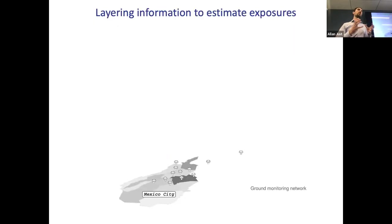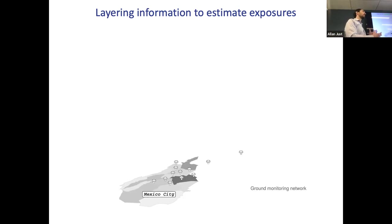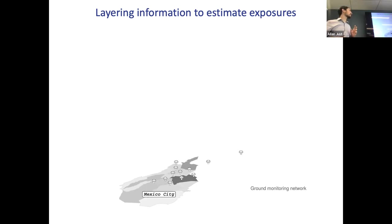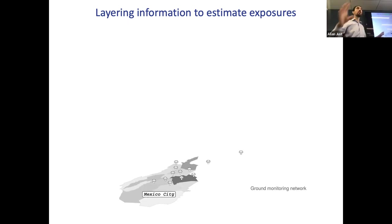What we're doing is layering different kinds of information. This is from work we did in Mexico City, which had a legacy of very bad air pollution that's been improving. They installed some air quality monitors measuring daily concentrations of fine particulate matter PM2.5 with aerodynamic diameters less than 2.5 microns. But it's a pretty sparse network — just a few monitors throughout the city — and there's a huge populace.